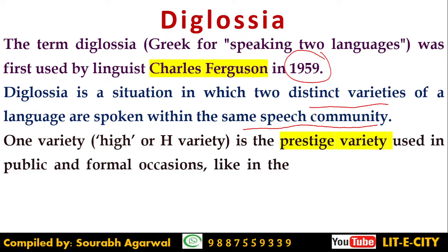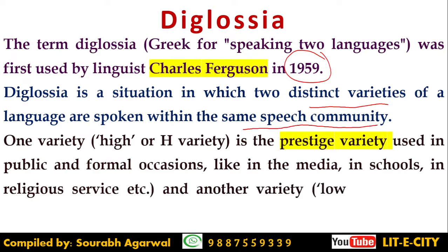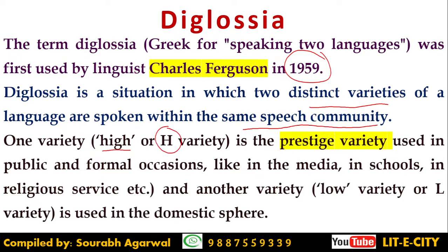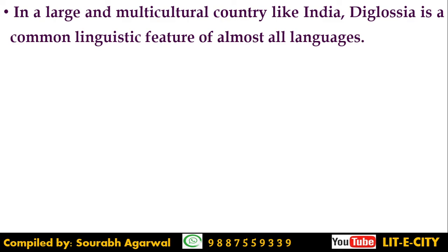Between these two varieties, one is labeled the high variety or H variety — it is the prestige variety, used in public and formal occasions such as in media, schools, offices, and religious services. The other is known as the low variety or L variety, used in intimate and domestic spheres. In large multicultural countries, especially India, diglossia is a very commonly found linguistic feature.